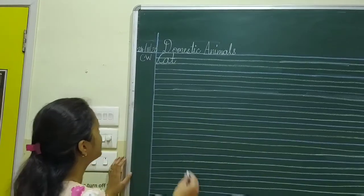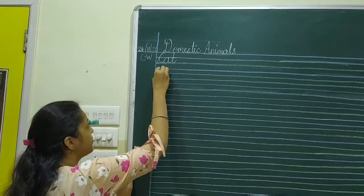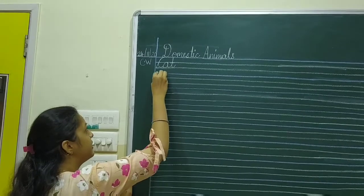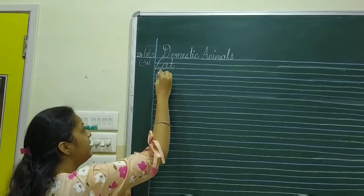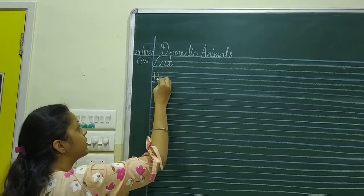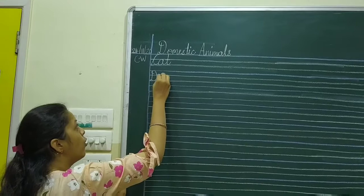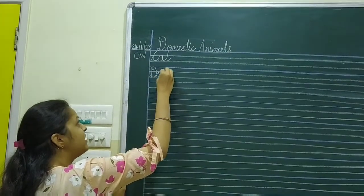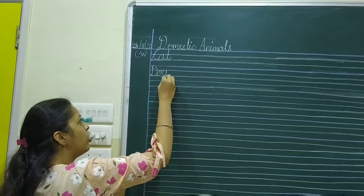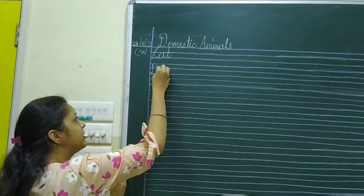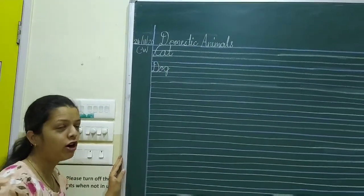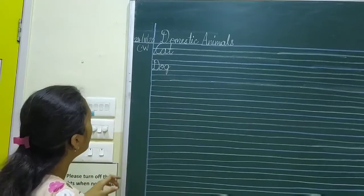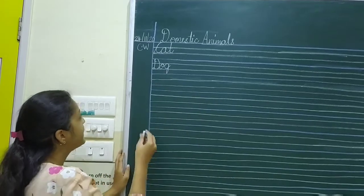Next — Dog. Cursive D. D-O-G. Dog. D, O, G — Dog.